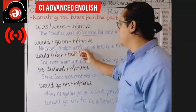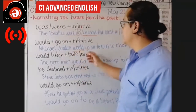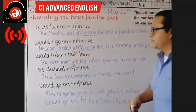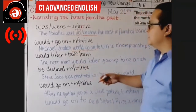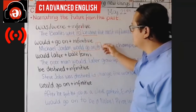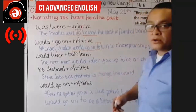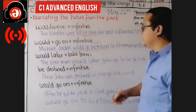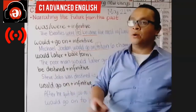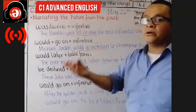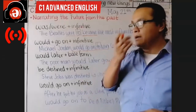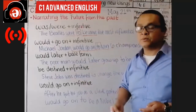The structure here is 'would go on,' which is the modal-like form, followed by the infinitive — 'to' plus the verb in base form — 'to win.' Would go on to win. You could also say: would go on to conquer the world of basketball, would go on to become a very successful athlete.